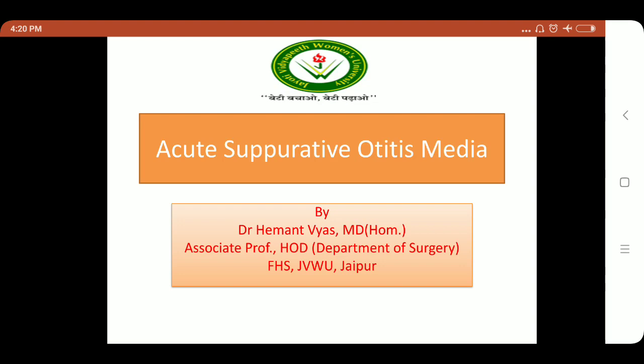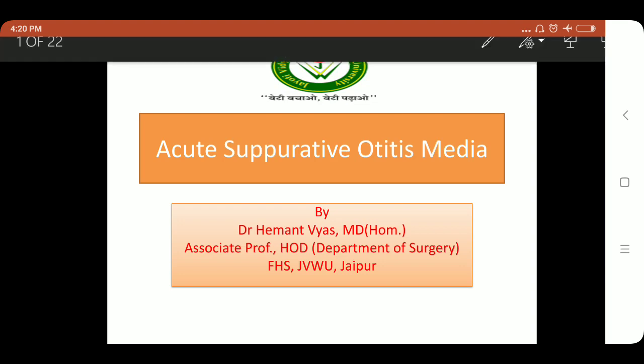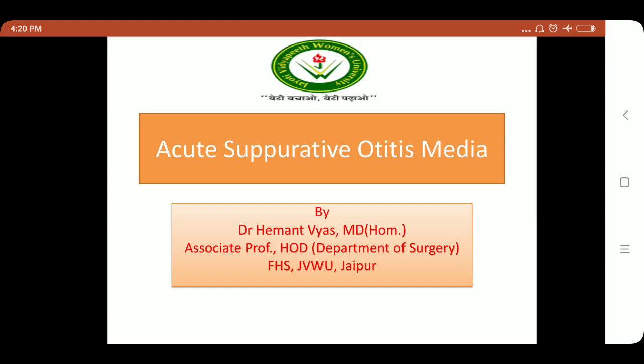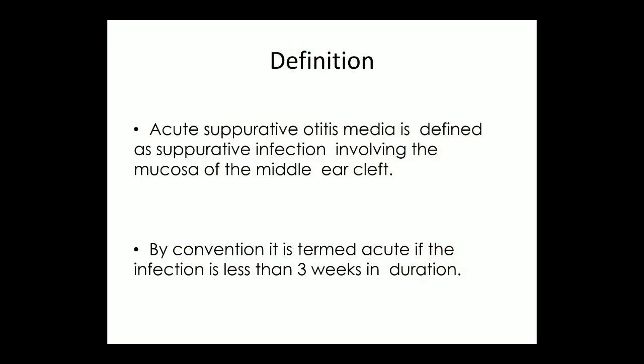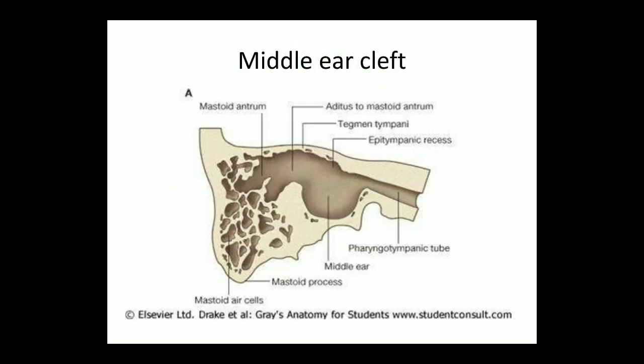In today's session we are going to discuss about acute suppurative otitis media. Acute suppurative otitis media is defined as suppurative infection involving the mucosa of middle ear cleft. By convention, it is termed acute if the infection is less than 3 weeks in duration. The middle ear cleft includes the Eustachian tube, middle ear cavity, and mastoid bone.